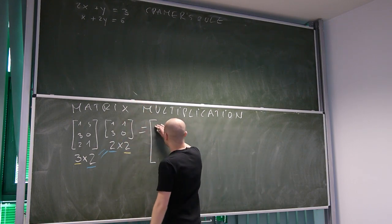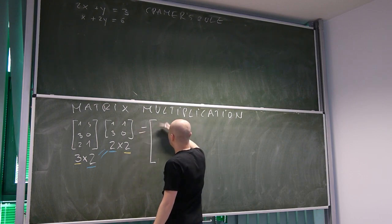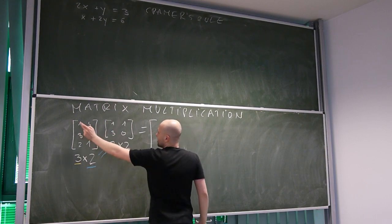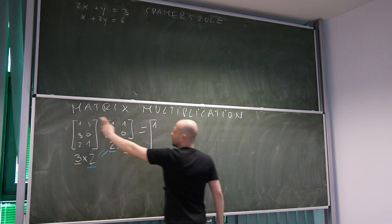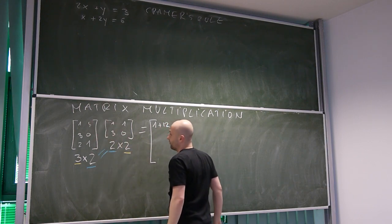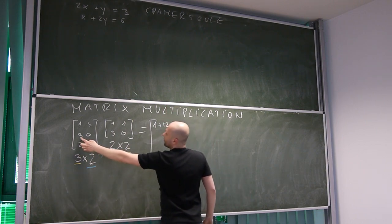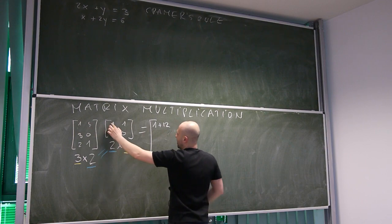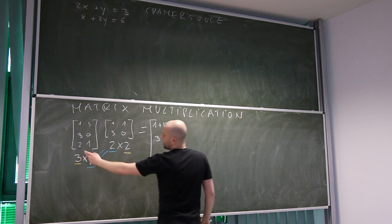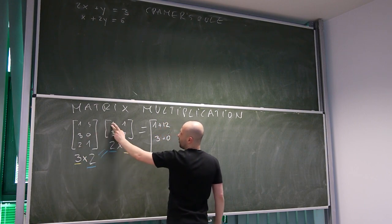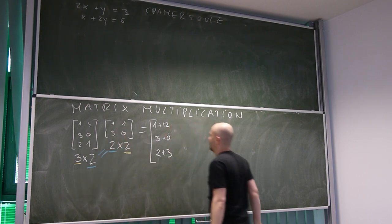First we look for element that's going to lie in the first row, first column. So we multiply first row, first column. One times one is one, plus four times three is twelve. Then, this element, second row, first column. Three times one is three, plus zero times three is zero. Then, we have two times one is two, plus one times three is three.